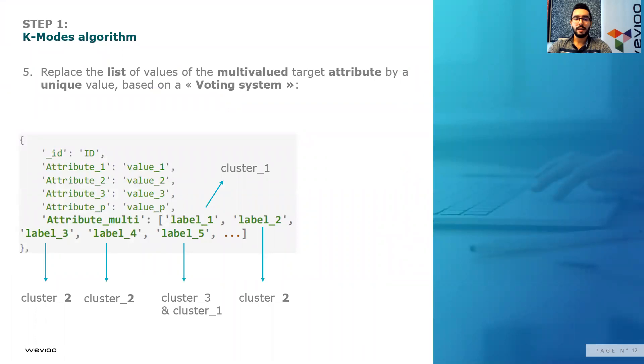If we take an example, this object which has the following multivalued key with label one, label two, label three, four, and five. After we implemented the K-modes algorithm and generated the clusters of labels, we found out that label three belongs to cluster two, label four to cluster two. Label two also belongs to cluster two. And we found out that label five belongs to cluster three and one at the same time.